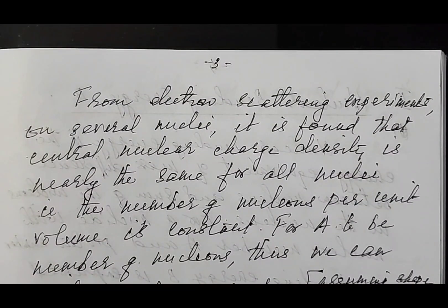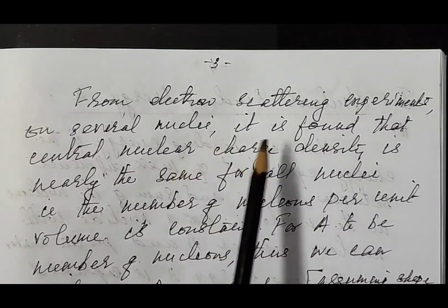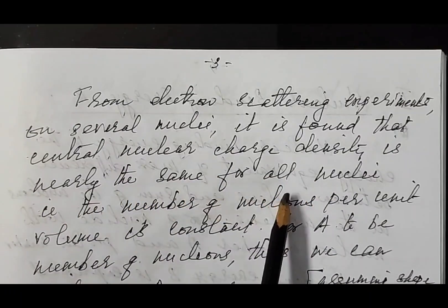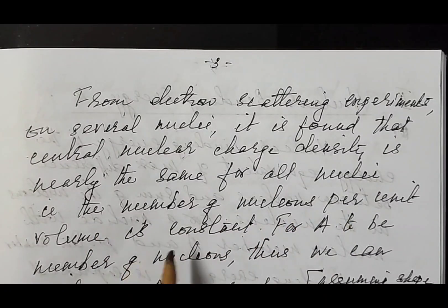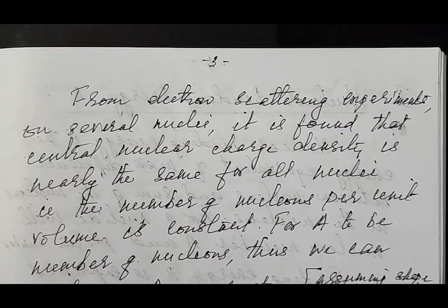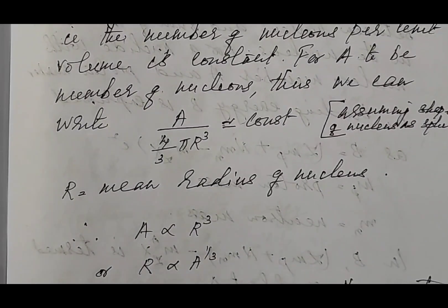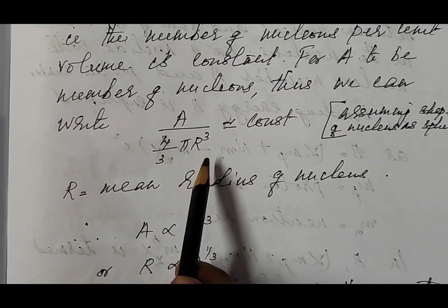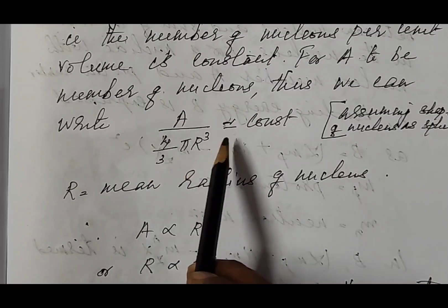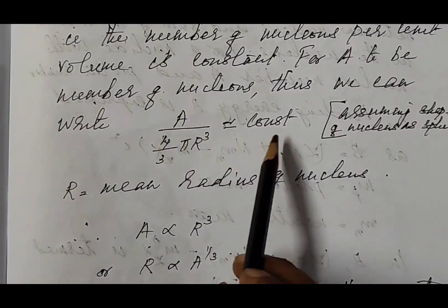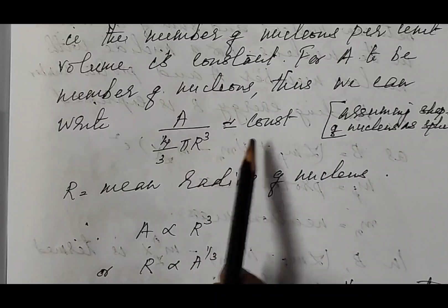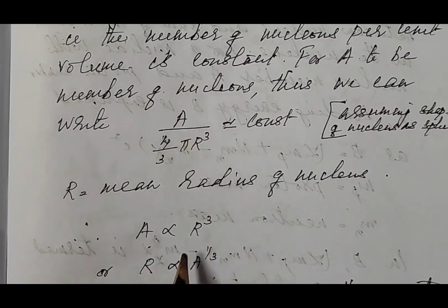From electron scattering experiments on several nuclei, it is found that the central nuclear charge density is nearly the same for all nuclei. That is, the number of nucleons per unit volume is constant for A nucleons. Thus we can write A divided by (4/3)πr³ equals a constant, meaning A is proportional to r³.